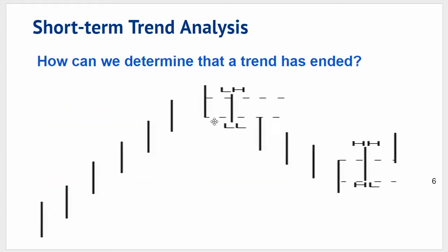Here we see our example once again: a series of higher highs and higher lows leading from the bottom left hand corner. Up to this point we compare that bar to the previous bar — we then have a lower high and a lower low in place. Moving down, a series of lower highs and lower lows, and at this point in the second bar from the right, comparing that to the previous bar we have a higher high and a higher low — therefore a change of trend to the upside.